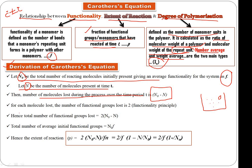For each molecule lost, the number of functional groups lost is 2. This is according to the functionality principle - the polymer will only form when the functionality of each monomer is at least 2. So when one molecule participates in polymerization, the minimum functionality lost is 2. Therefore, total functional groups lost is 2(N₀ - N).